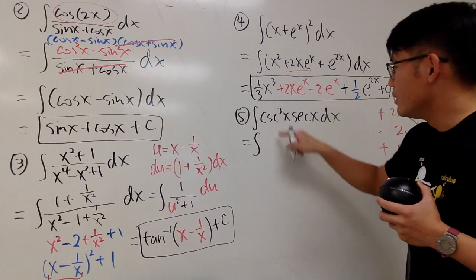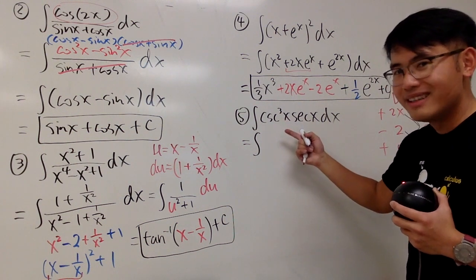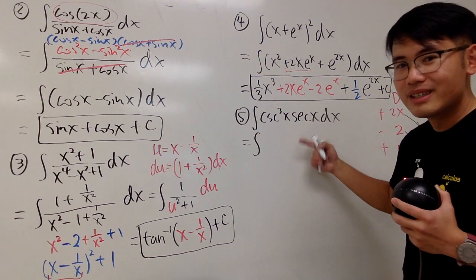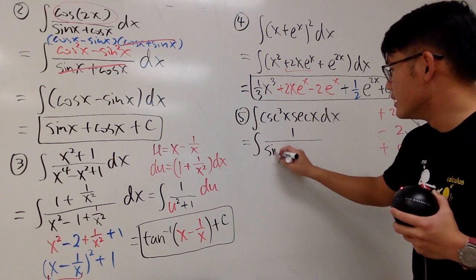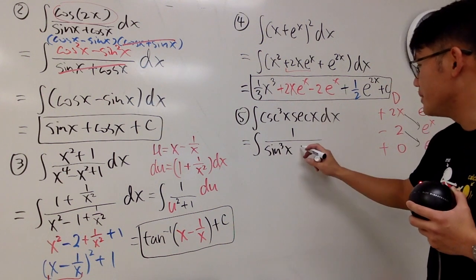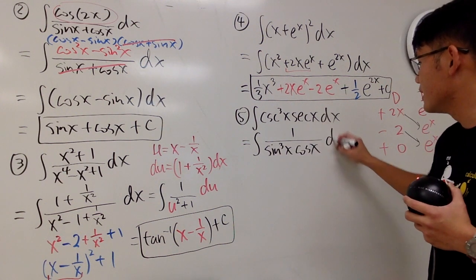So I'll look at this as 1 over sine to the third power, and this is 1 over cosine. So I will just put down 1 over this being sine to the third power x, and then this being cosine x dx, like that.